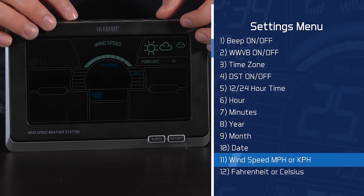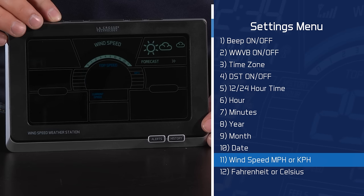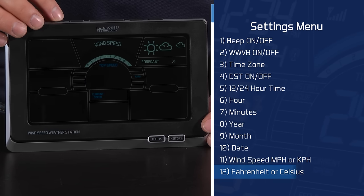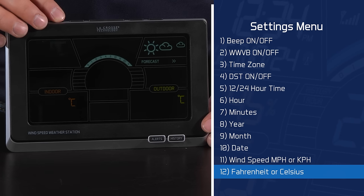Item 11 lets us adjust how we'd like to view our wind speed in miles per hour or kilometers per hour. And finally, item number 12 allows us to choose between Fahrenheit or Celsius temperature readings.